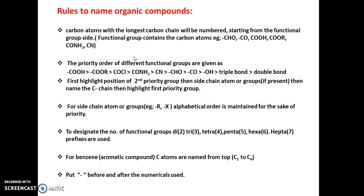Once you decide the functional group which will get more priority, you have to start the numbering from that side. Suppose there are two functional groups, COOH and COR, present in a compound. You have to start the numbering of the carbon atoms from the side which contains the higher priority group. If COOH is on the left side, you start from the left; if it's on the right side, start from the right.